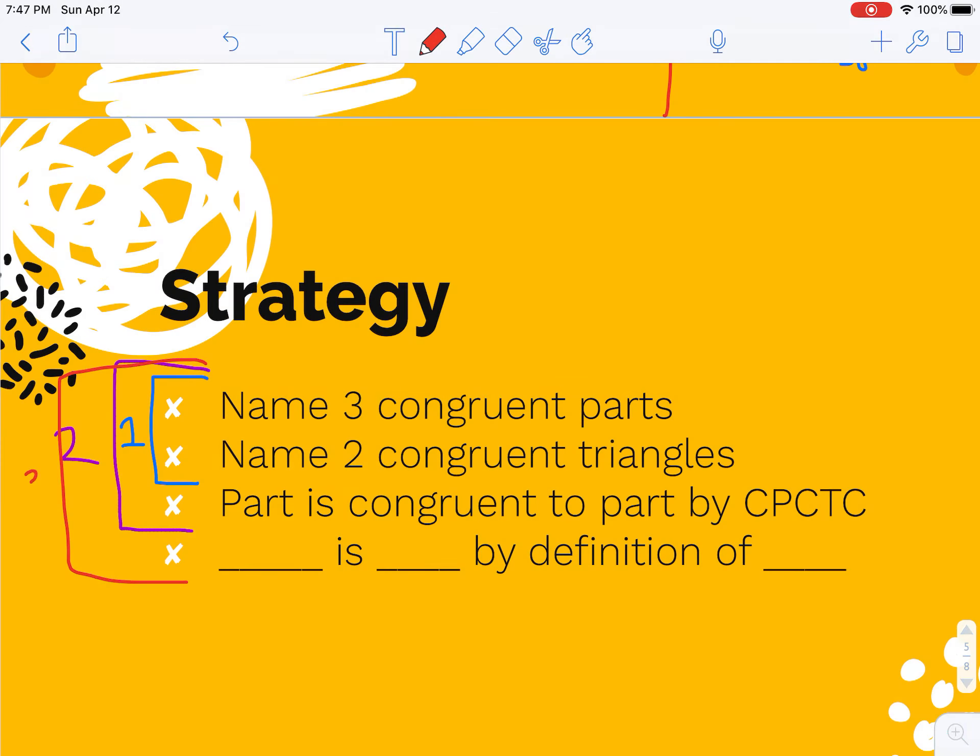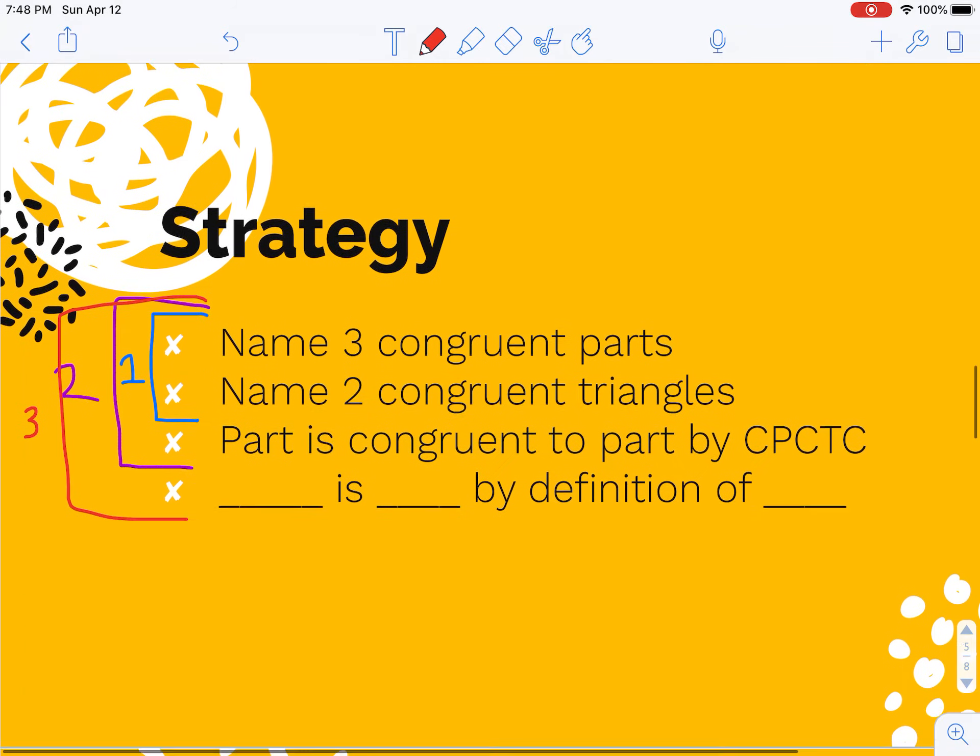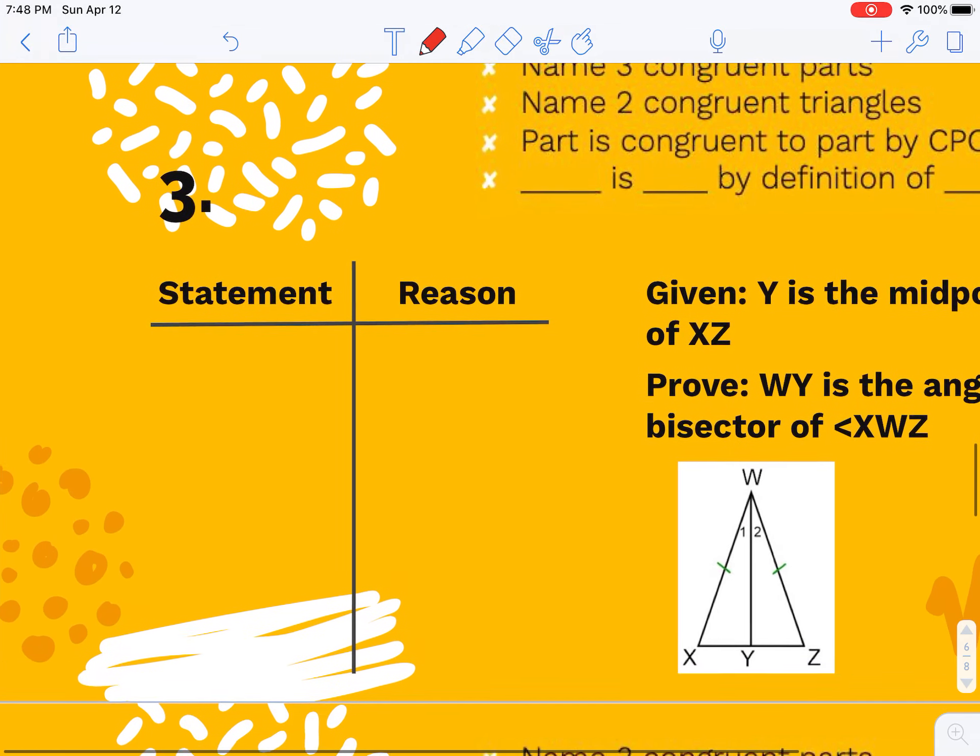Up until today, you had kind of a step two proof where you had that whole thing, and then you added another line saying this piece is congruent to that piece by CPCTC. You're still going to do that today. Today is kind of a step three. You're going to have your three congruent parts, your two congruent triangles. You'll say this part is congruent to that part by CPCTC, and then you're going to add another line saying this is an angle bisector by definition of angle bisector, or this is a median by definition of median, or this is the midpoint by definition of a midpoint. Your parts that you prove congruent should be relevant to what definition you're proving.